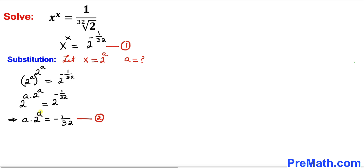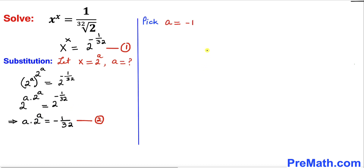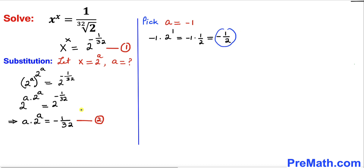Now we find the value of a such that equation 2 is true. We pick a equals to negative 1 and plug it in. The left hand side becomes negative 1 times 2 power negative 1, which simplifies to negative 1 times 1 over 2, giving negative 1 divided by 2. This does not equal negative 1 over 32, so we reject a equals to negative 1.